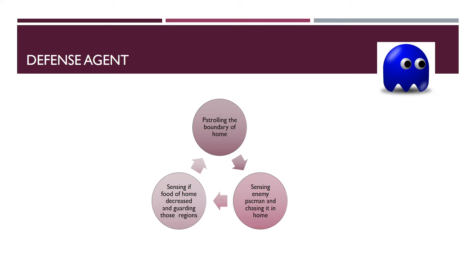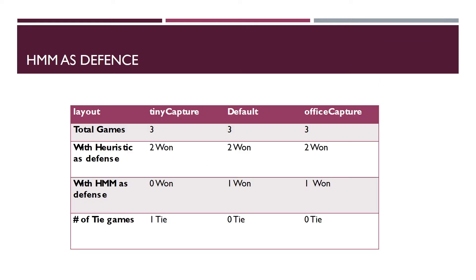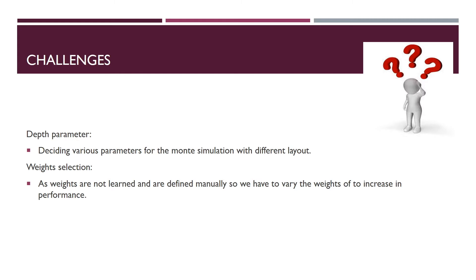The heuristic value is found using the getMazeDistance function, which finds the distance using Manhattan distance. We also ran an experiment to compare our agent against one using HMM. The HMM agent does not perform as well as the heuristic approach because it takes more time to find the optimal action.